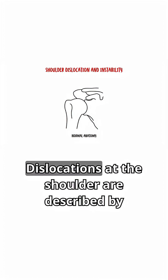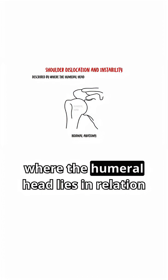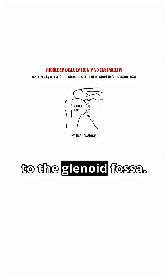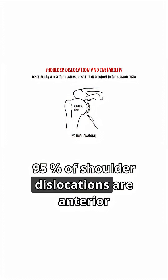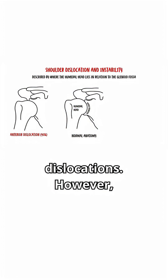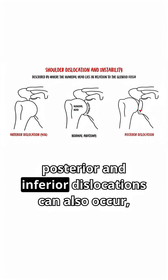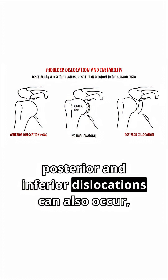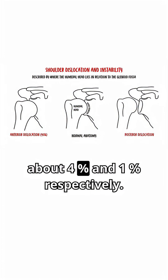As said previously, the shoulder joint is one of the most frequently dislocated joints in the body. Dislocations at the shoulder are described by where the humeral head lies in relation to the glenoid fossa. 95% of shoulder dislocations are anterior dislocations. However, posterior and inferior dislocations can also occur, about 4% and 1% respectively.